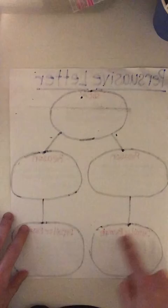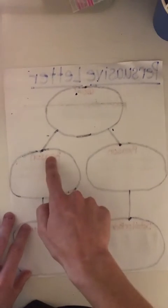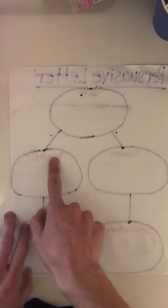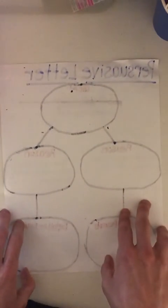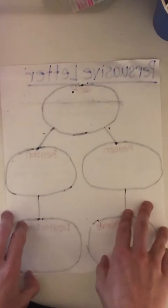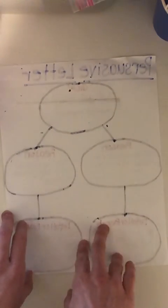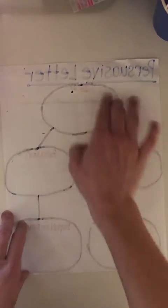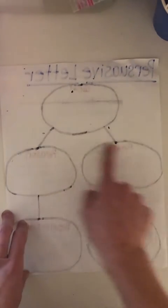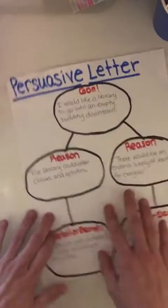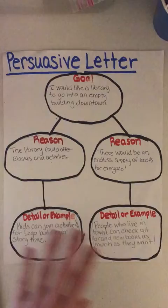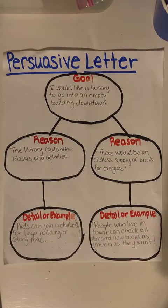Mine, if I flip it over like this, I can see the marker through the back — which that's what happens when Mrs. Simmons uses the smelly markers. So you can use the back; yours probably doesn't look like the back of mine.